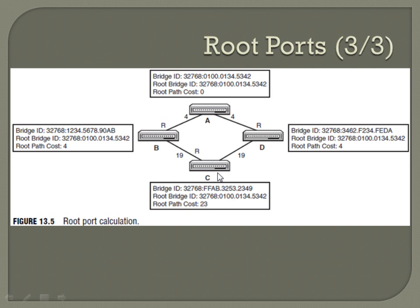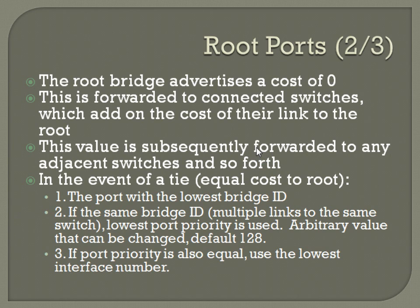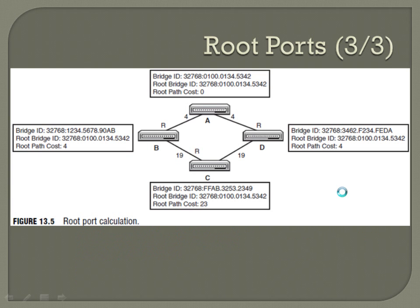For B and D, it's obvious — their direct path to A is the cheapest. For switch C, both links to the root bridge have a cost of 23, so we go to the tiebreaker: the port with the lowest bridge ID. Since B and D both have 32768 as their priority, we compare MAC addresses. B starts with 1234 and D starts with 3462. Since B has the lower MAC address, C is going to prefer the link to B as its root port back to the root bridge.